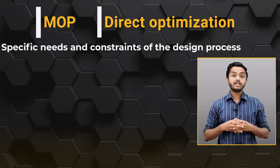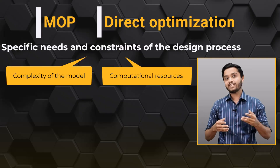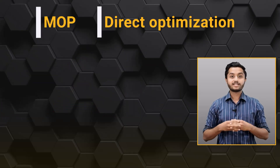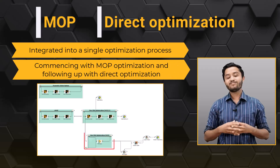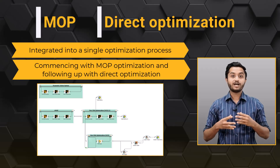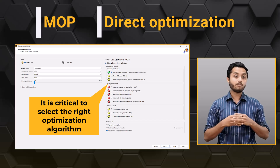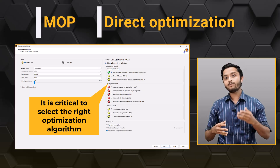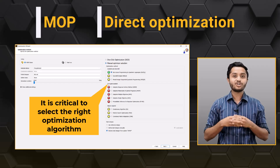The choice between MOAP optimization and direct optimization depends on the specific needs and constraints of the design process. Factors to consider include the complexity of the model, the computational resources available, and the desired accuracy and speed of the optimization process. If required, these two methods can also be integrated into a single optimization process, commencing with MOAP optimization and following up with direct optimization. Regardless of the approach chosen, it is critical to select the right optimization algorithm. ANSYS OptiSlang's optimization wizard assists in identifying the most suitable algorithm settings for your optimization tasks.